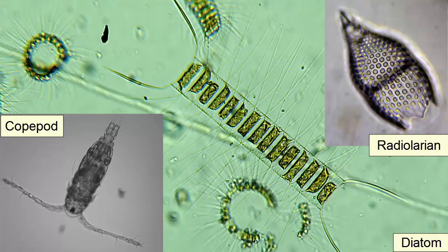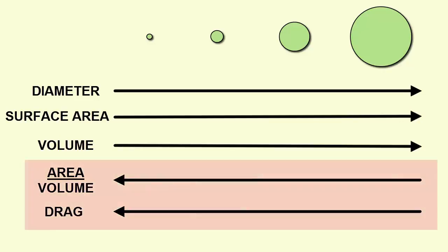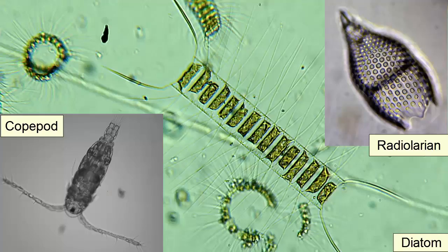However, the best way to maximize drag is to just get smaller and smaller. As a spherical body gets larger, its surface area decreases relative to its overall volume. To get the highest surface area per volume or weight, you want to be the smallest possible.